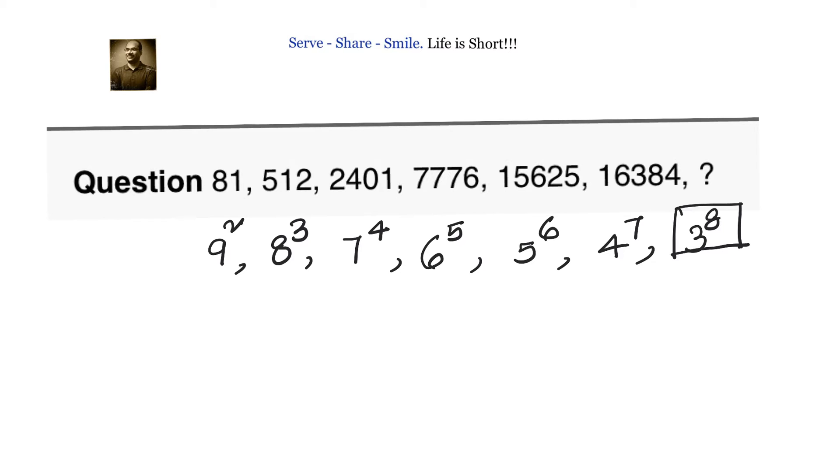If you have multiple choice, you will be having that option. 3 power 8 is 3 power 4 whole square, that is 81 square, which is equals to 6561.